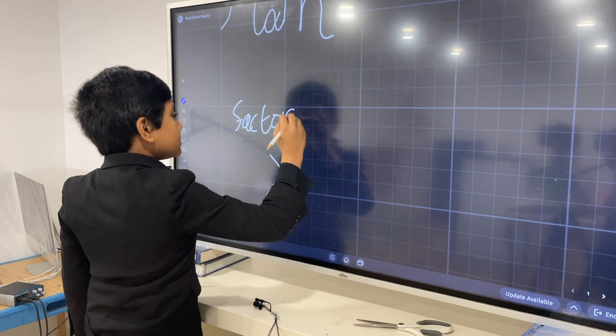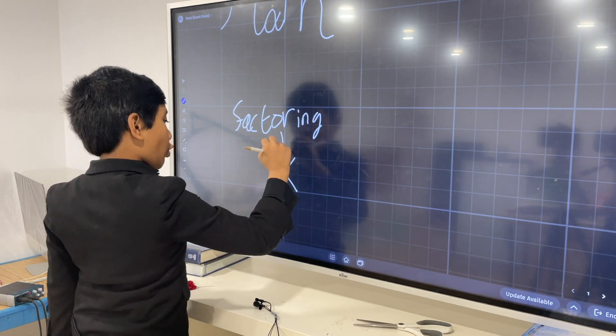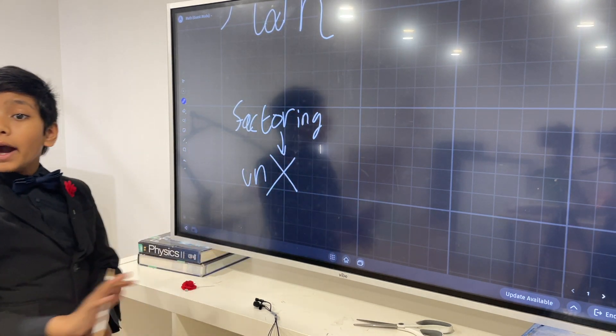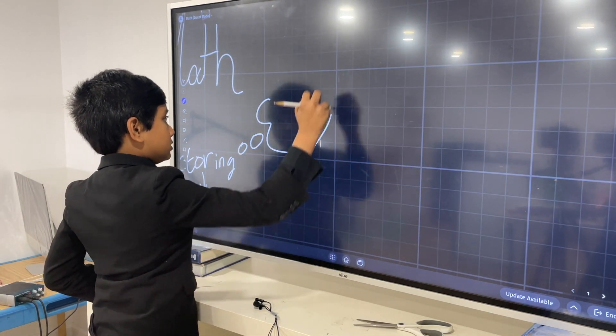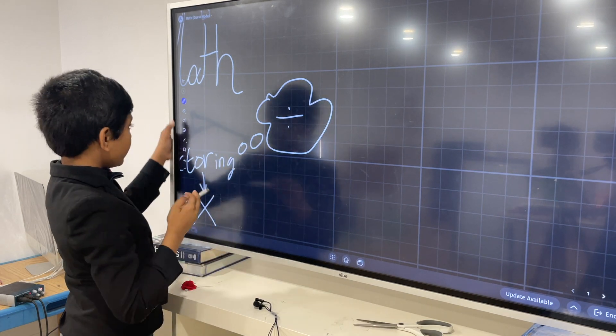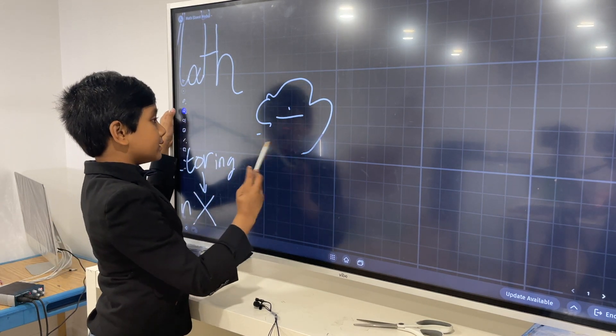And factoring is kind of like reverse multiplication or unmultiplying. Now, you may just think, that's division, isn't it? Well, division is quite similar to it, but this is different.